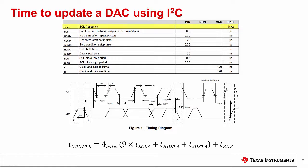For this example, our DAC is using the fast plus mode timing specifications. For each of the four bytes of data, there are nine clock periods, plus the hold time after the start edge, plus the setup time after the repeated start or stop edge. In most devices, these have the same timing requirements.